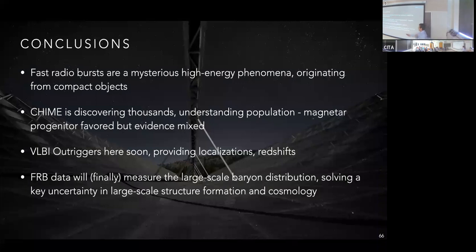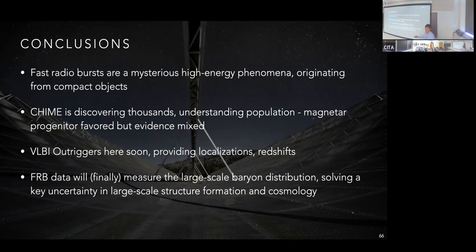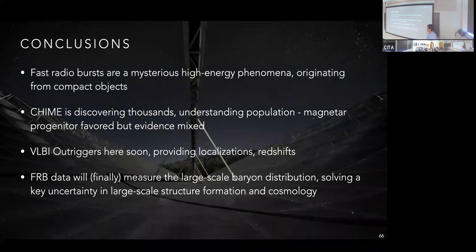In conclusion: fast radio bursts are a mysterious high-energy phenomenon originating from compact objects. CHIME is discovering thousands of them and we're starting to understand the population. The magnetar progenitor hypothesis is favored from direct association and other evidence, but there's mixed evidence from source environments. The VLBI outriggers program will soon provide thousands of localizations and redshifts, giving a much more holistic view. And this same FRB data will finally measure the intermediate-scale baryon distribution, solving a key uncertainty in large-scale structure evolution and cosmology.